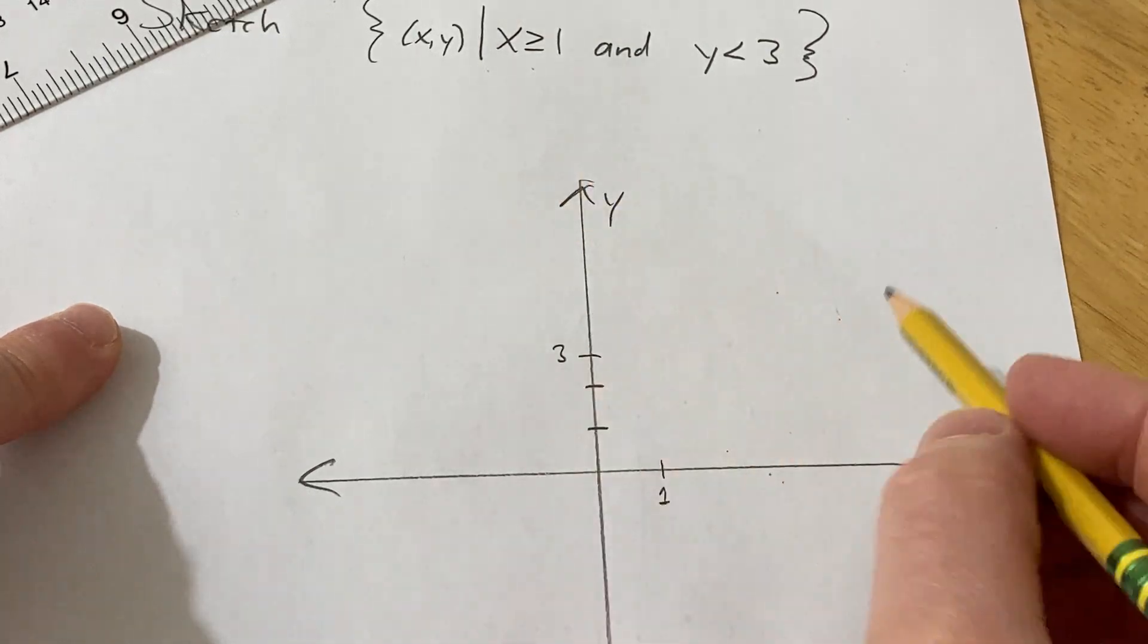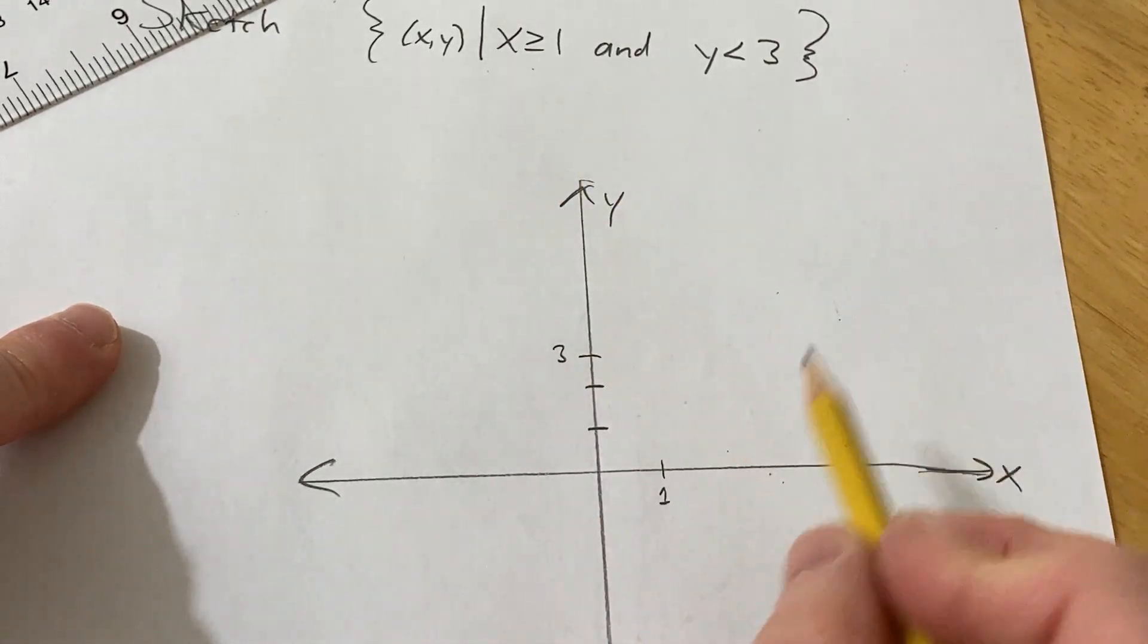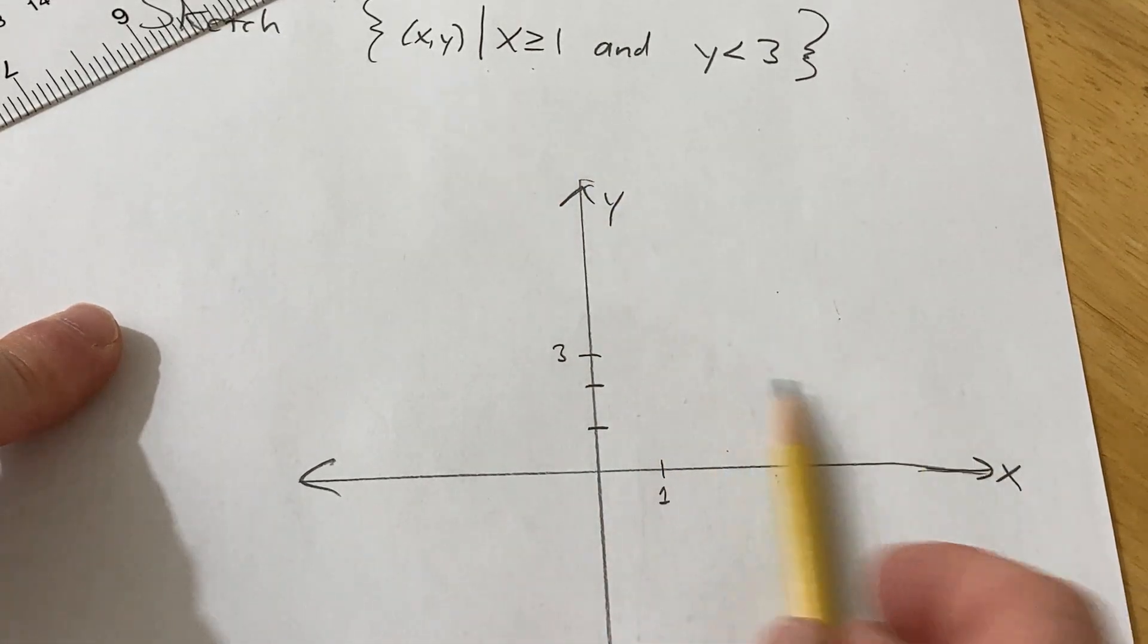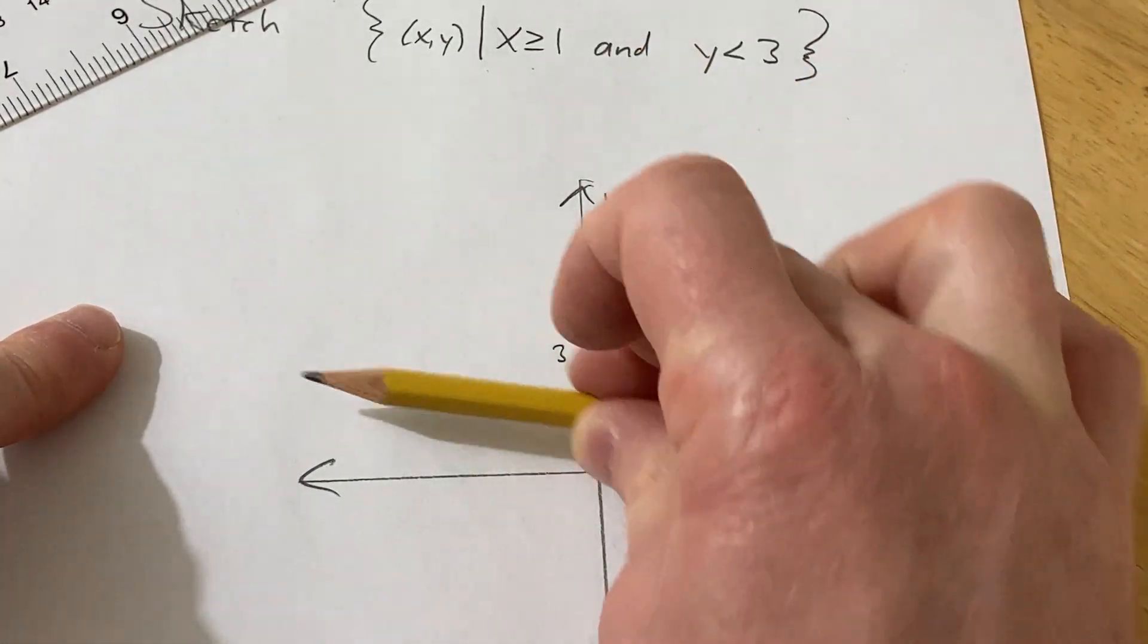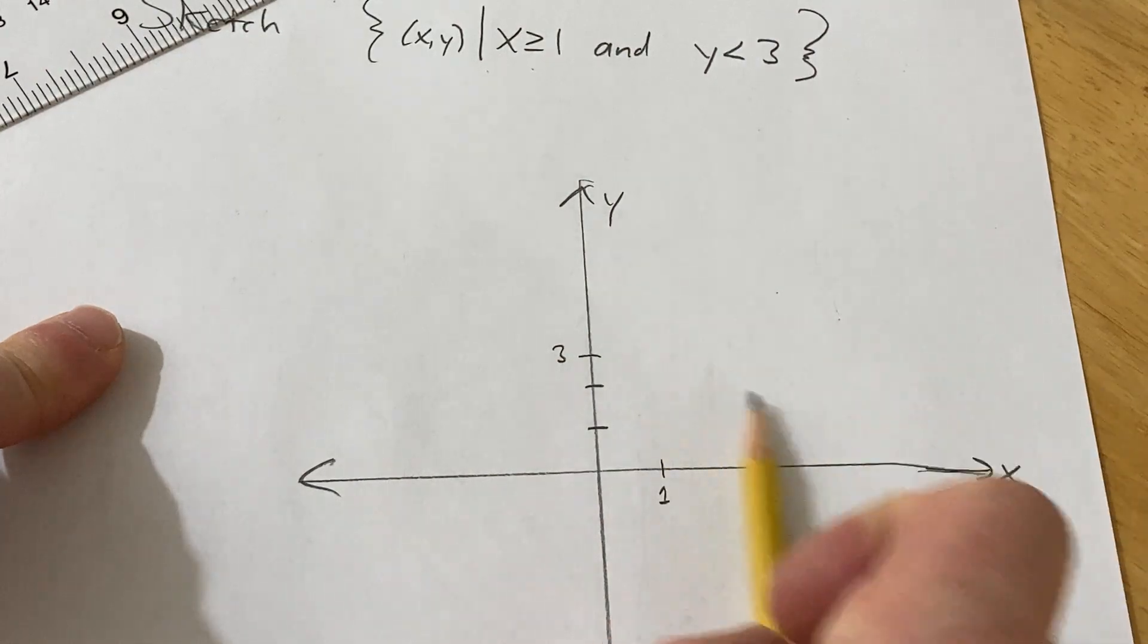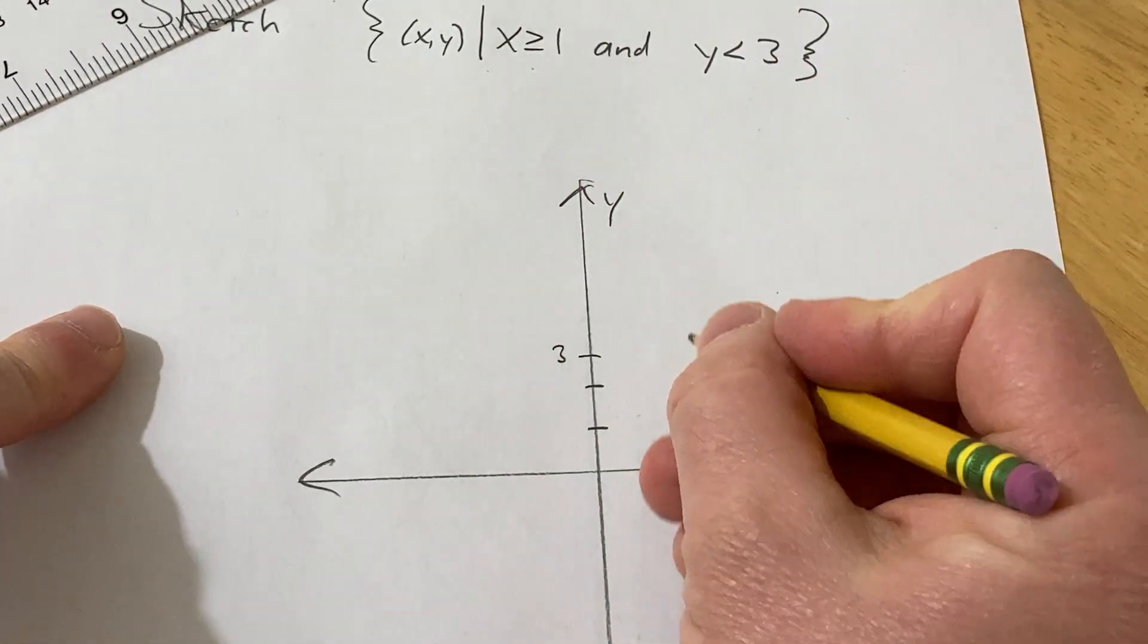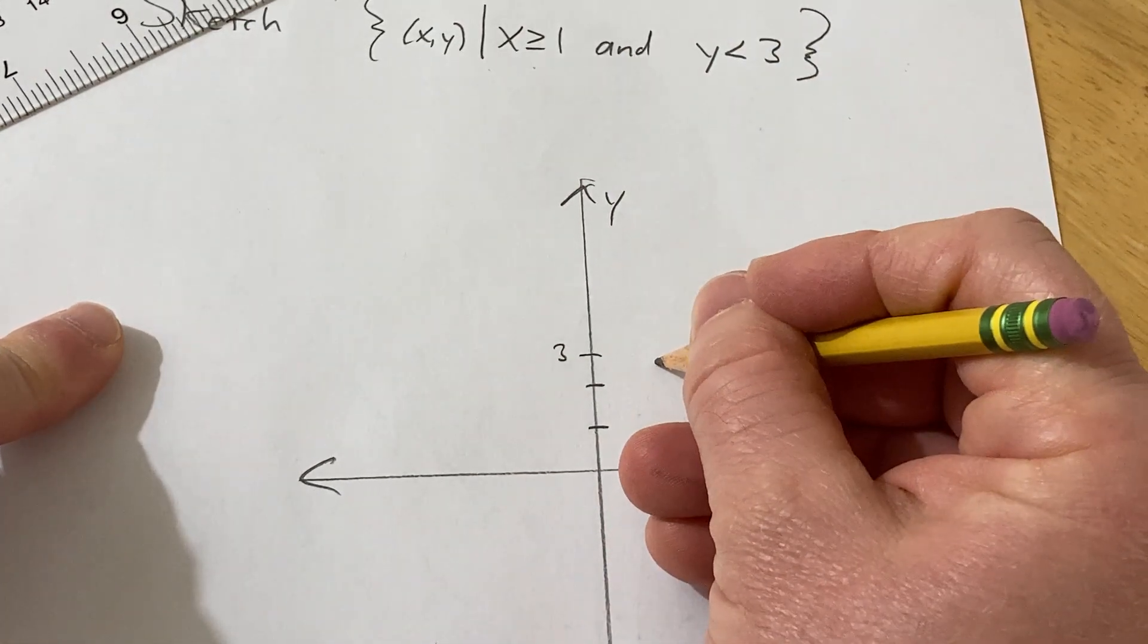So basically, all of the ordered pairs have to be such that x is greater than or equal to 1, so they have to be over here, and the y-coordinates have to be less than 3. So basically you're going to have some rectangle here, I'm just going to show you.